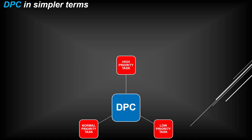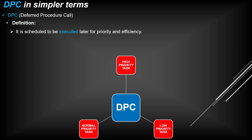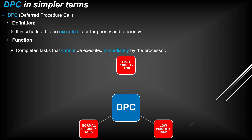DPC in simpler terms: it is scheduled to be executed later for priority and efficiency, completing tasks that cannot be executed immediately by the ISR. Every task that the ISR cannot execute immediately, DPC will execute later. DPC executes the high-priority task first, then the normal-priority task, and lastly the low-priority task.